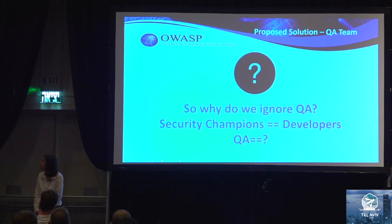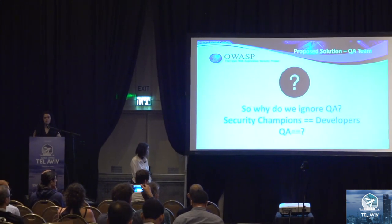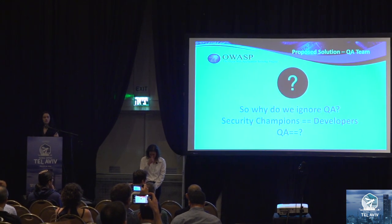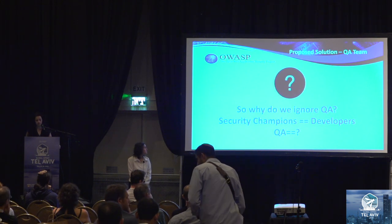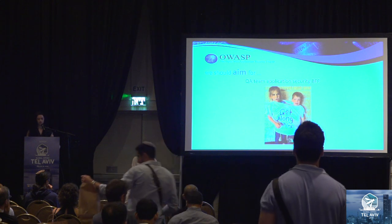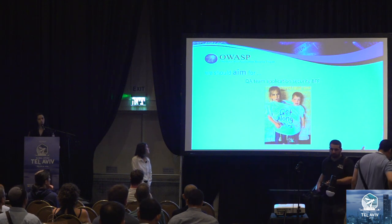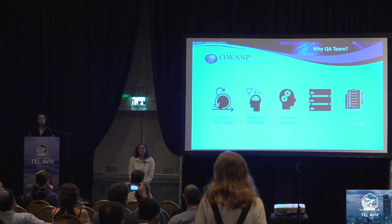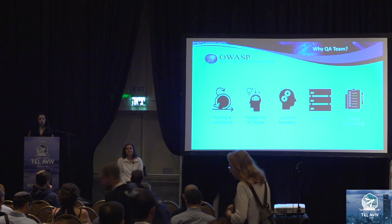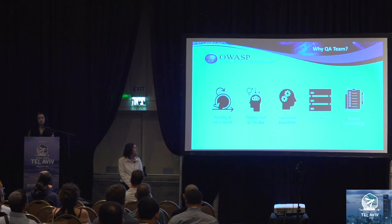Often we talk about developers, but we rarely mention the QA team. We propose solving the problem by working together with the QA team — they help us to perform the security testing. In our experience, the QA team and the security team can work very well together. Why do we choose the QA team? Because they are running tests in every sprint, they are thinking out of the box, they already have an environment ready, and they know the application very well — the business and the functionality. Because of that, it's very easy to insert additional test cases.